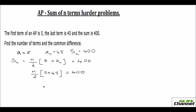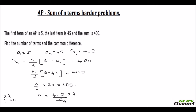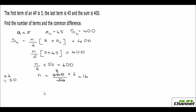That gives n over 2 times 50 = 400. Multiplying both sides by 2 and dividing by 50: n = 400 times 2 over 50. So 50 goes into 800 sixteen times, giving n = 16.